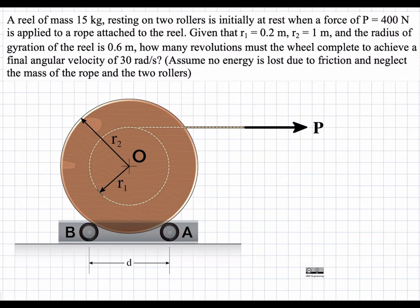This is a work-energy problem. We're starting from the state where the reel is at rest and we need to add a certain amount of work — force P times a distance — to achieve a final angular velocity of 30 radians per second. We're also assuming the rollers are frictionless and we can neglect their mass in terms of increasing their kinetic energy as well.